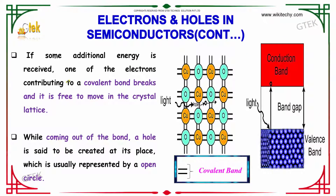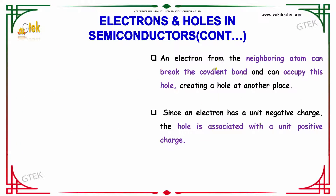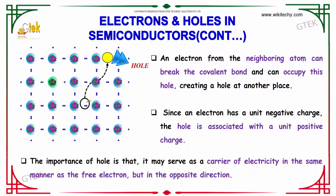If some additional energy is received, one of the electrons contributing to a covalent bond breaks, and it is free to move in the crystal lattice. You can see it here. While coming out of the bond, a hole is created at this place, which is usually represented by an open circle. An electron from the neighboring atom can break the covalent bond and can occupy this hole, creating a hole at another place.